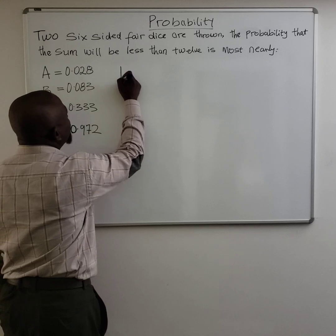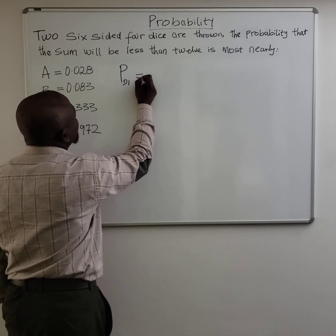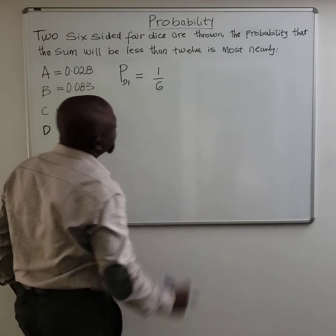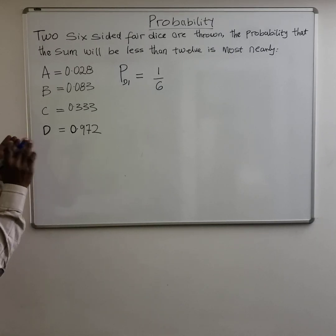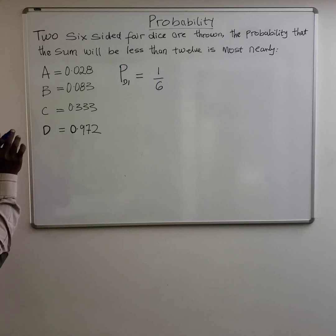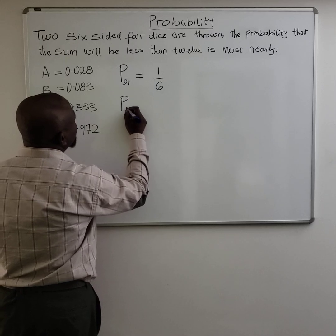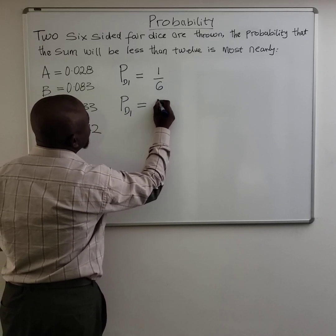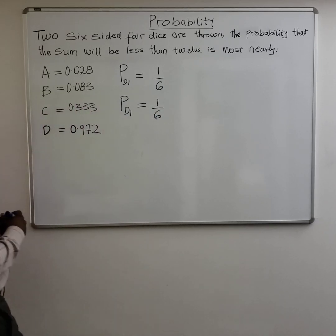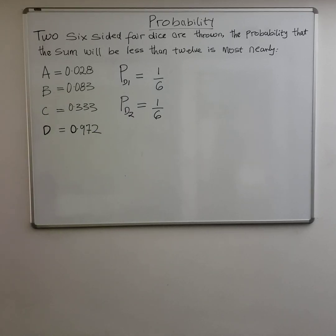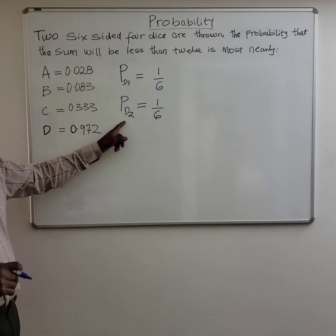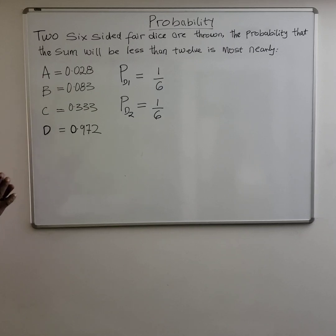We know that the probability of one die showing a six is one over six — that's very clear. With two dice, you can break this problem into two by dealing with each die separately. The probability of getting a six on die one is one over six, and the probability of getting a six on die two is also one over six. That's the only possibility where we can have a sum of 12.